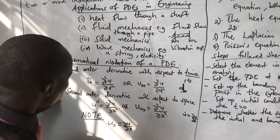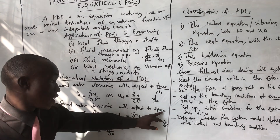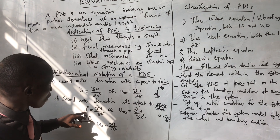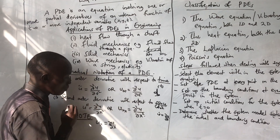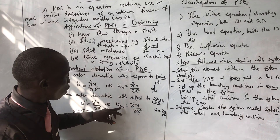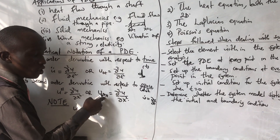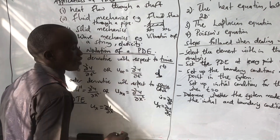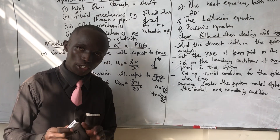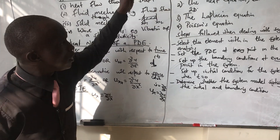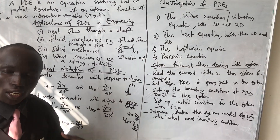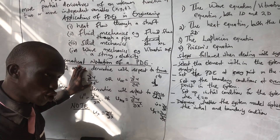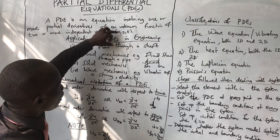For the second order derivative with respect to space — where space is the distance x — we use u double prime, the same as the partial of u with respect to x, or u-subscript-xx. When it's first order, we write it as u-x, the same as the partial of u with respect to x. Knowing this notation, you will be able to analyze the wave equation, heat equation, Laplace equation, and Poisson equation.